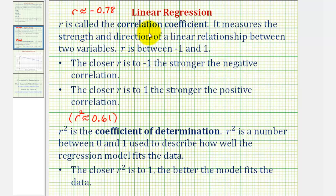R is called the correlation coefficient. It measures the strength and direction of a linear relationship between the two variables, or in our case, x and y. And r is always between negative 1 and positive 1. The closer r is to negative 1, the stronger the negative correlation, which means as x increases, y would decrease.